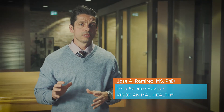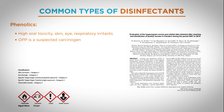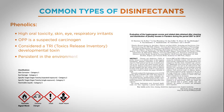Another class of disinfectant actives are phenolics. Phenolics are typically formulated in a mixture of different phenolic compounds. They have high oral toxicity and are skin, eye, and respiratory irritants. One of the more common elements in a phenol formulation is a compound called OPP, or orthophenyl phenol. OPP is a recognized carcinogen by California Prop 65 and is also a TRI developmental toxin. Phenols are generally persistent in the environment, and there is extensive evidence of resistance development to them.